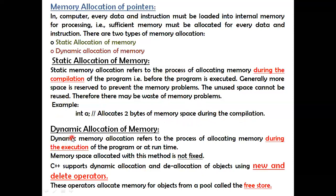The second method is dynamic allocation of memory. Dynamic memory allocation refers to the process of allocating memory during the execution of the program — also called runtime. Memory space allocated with this method is not fixed; you can increase or reduce it. C++ supports dynamic allocation and de-allocation of objects using two operators: new and delete.